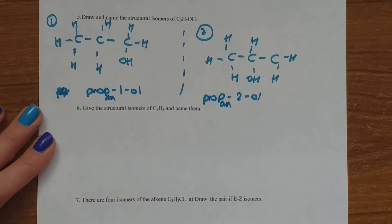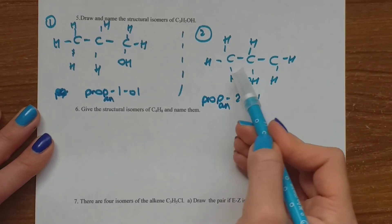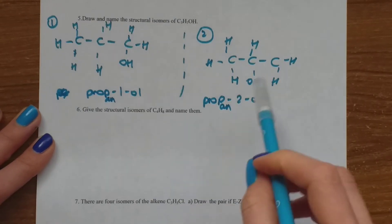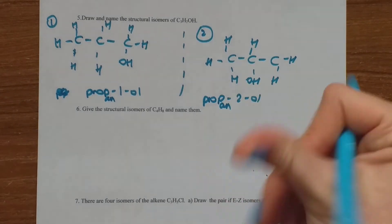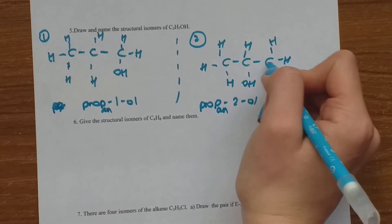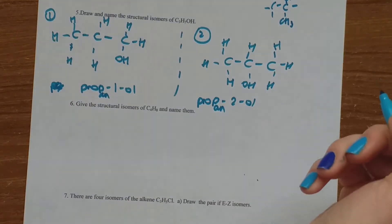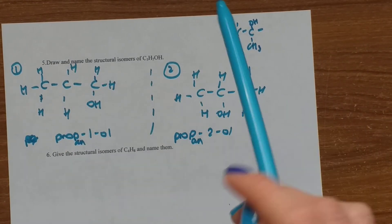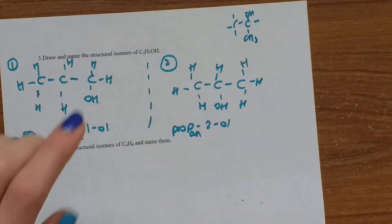After drawing two isomers, you have to think what other ones you could draw. You might think you can draw another one with an OH on the other side, but this wouldn't work because it would still be on the first carbon — you can number the carbons from either side. You could also try branching with a CH3 group, but our longest chain will still be 1, 2, 3 carbons with OH in the middle, so it would still be the same. There are no other isomers for this compound.